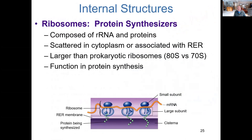Ribosomes are where proteins are assembled during translation. They're mostly composed of ribosomal RNA and various proteins, and each ribosome has a large and small subunit. The ribosome in a eukaryotic cell is different from the ribosome in the prokaryote in terms of chemistry — bigger in a eukaryotic cell. But both cells utilize it to link amino acids together during translation.